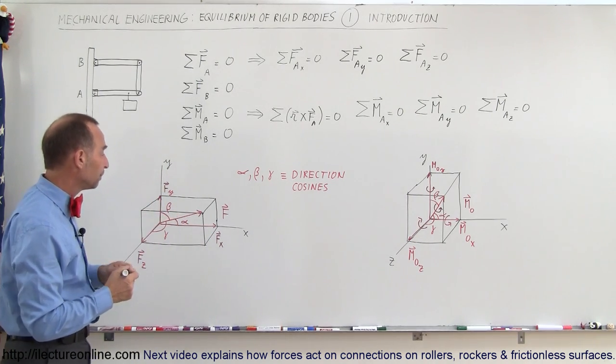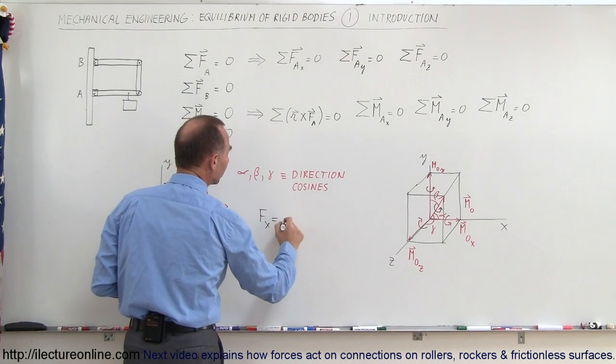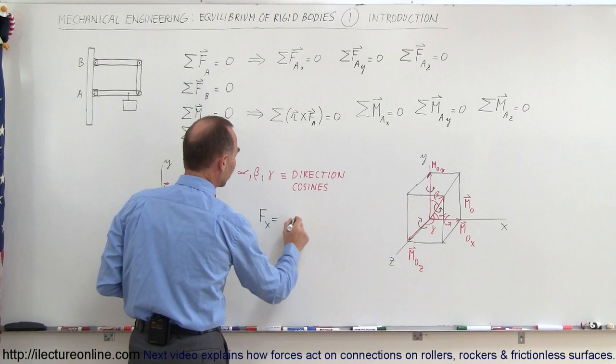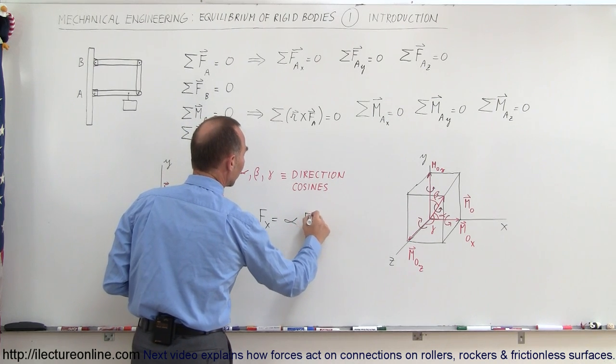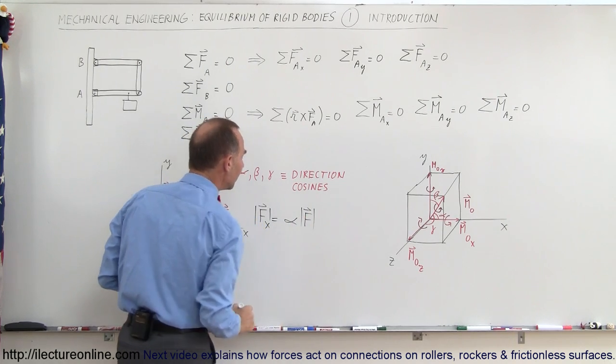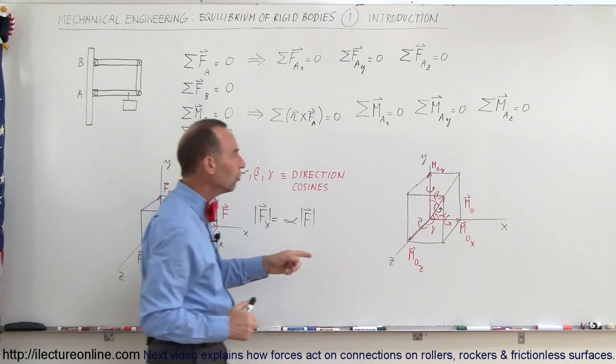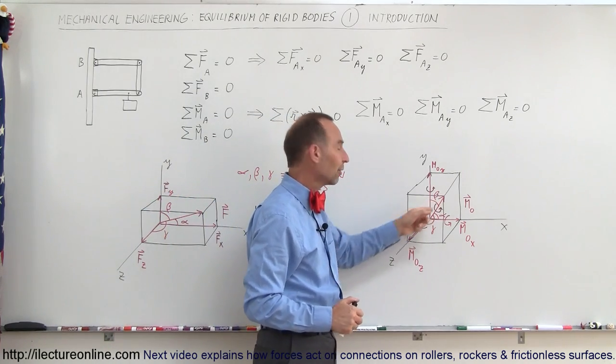So if you want to find, for example, f sub x, that would be equal to the direction cosine, which in this case would be alpha, times the force F. That's how we find the magnitude of the various components of a force.